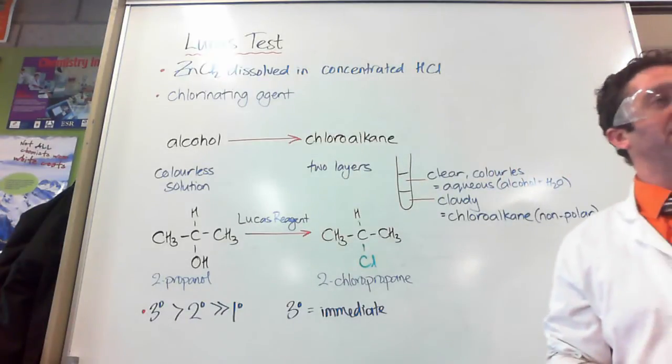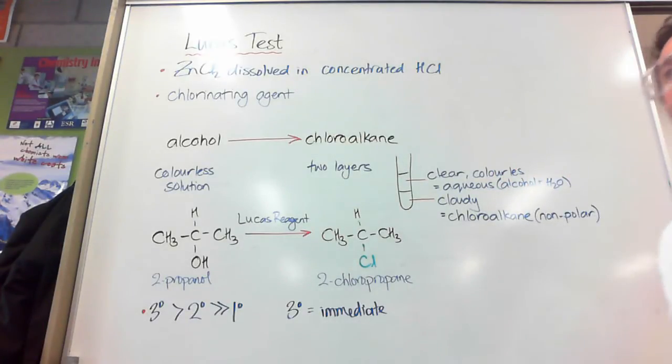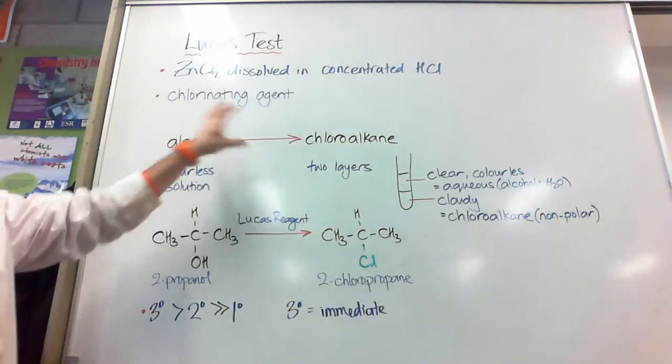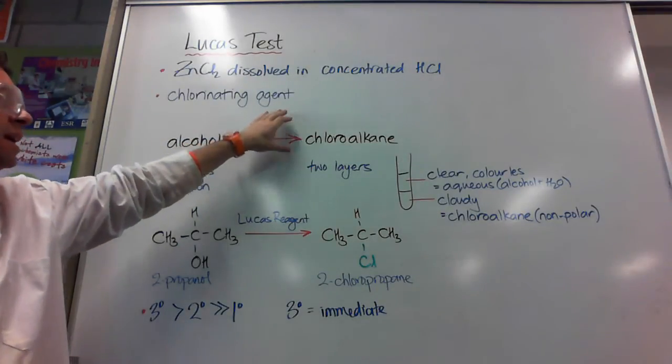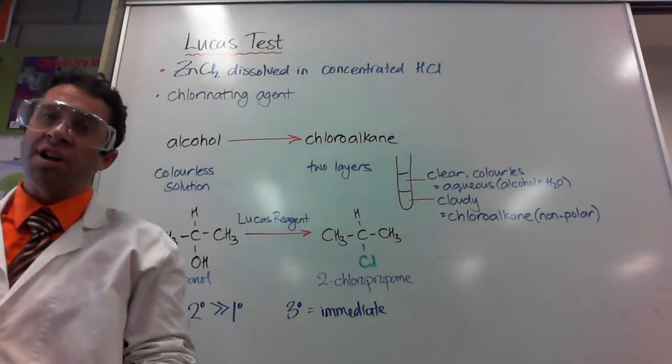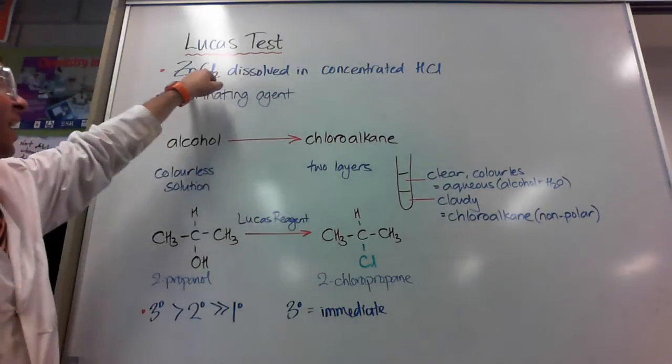So it's going to be able to add the chlorine atom, in the form of chloride ions, to things. So when I get an alcohol and I react it with the Lucas reagent, it becomes a chloroalkane.